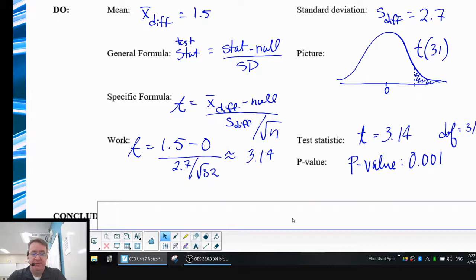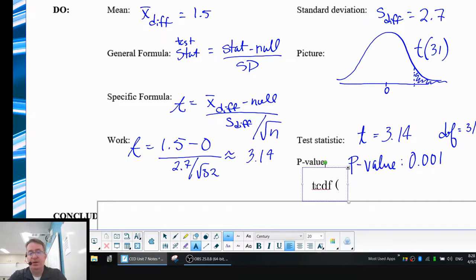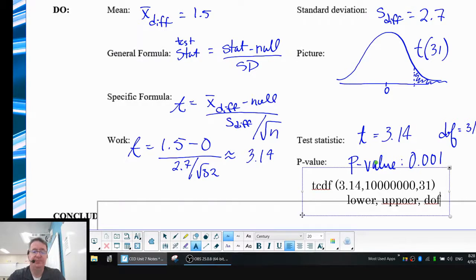One thing I didn't write down here is that we've got, that's going to be your t-cdf. And then remember what you would end up doing here. The picture is to show that you know where it's going on, but it's also basically a graphic organizer for you. We're going to go for 3.14, comma, large number, comma, and then our degrees of freedom. So we've got our lower, upper, and degrees of freedom.